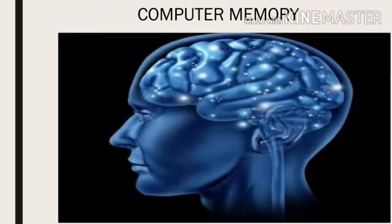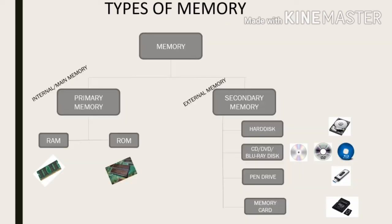Our next topic is computer memory. Computer memory is just like a human brain. As a human brain is capable of storing things permanently and temporarily, similarly a computer can also make use of both temporary and permanent memory. There are some things which you remember since your childhood — they retain in the permanent memory of your brain. And the things which you forget exist only in the temporary memory of the brain.